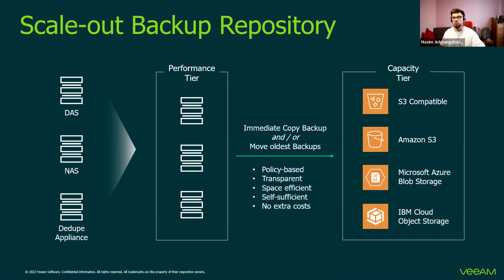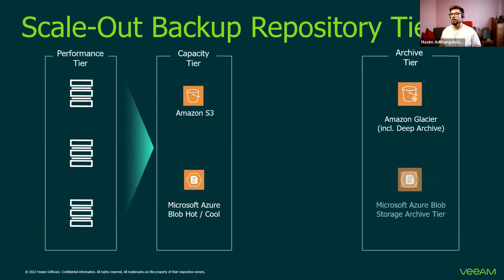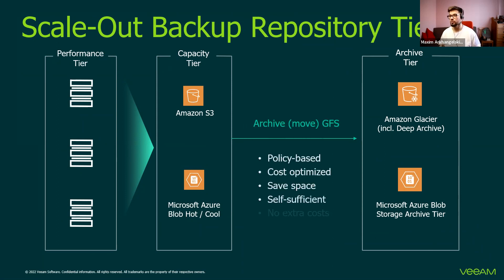In the next version of Veeam Backup and Replication and Veeam Cloud Connect, we will have an option to put data directly to object storage. Now we still have performance tier and capacity tier, and it works perfectly — IT Global supports this configuration. There are two modes: immediate copy backup or move just oldest backups. It's policy-based and transparent. For recoveries, you can just run instant virtual machine recovery from object storage in AWS. We also have an archive tier, which is Amazon Glacier and Azure Blob Storage archive tier. So if you would like to move GFS backups to long-term archive storage, it's also doable.